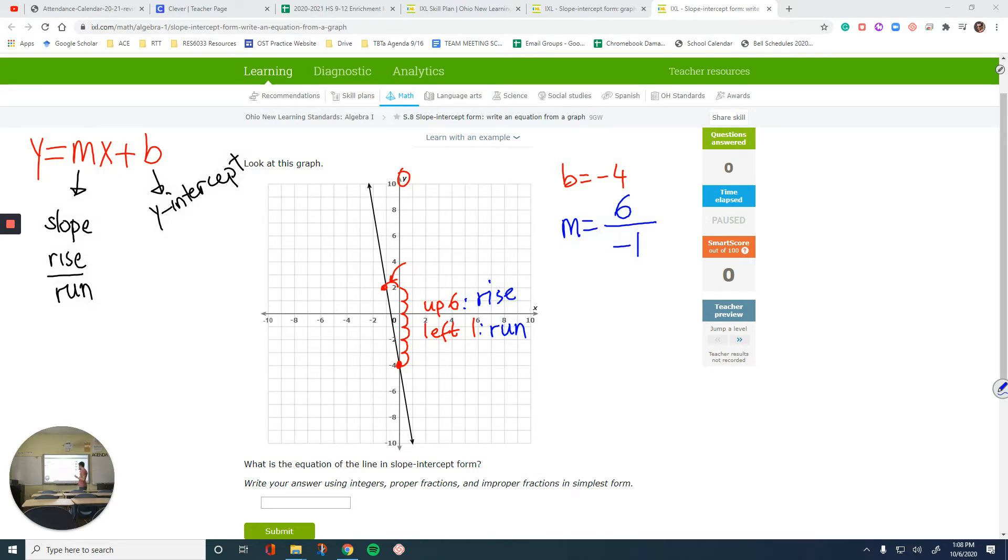It says write your answer using integers, proper fractions, and improper fractions in simplest form. That's the keyword. If you keep it that way, it's going to be wrong, because that's not the simplest form. You can divide 6 by negative 1, and the answer is just negative 6. If you can simplify it, simplify it as much as you can, then create your equation.